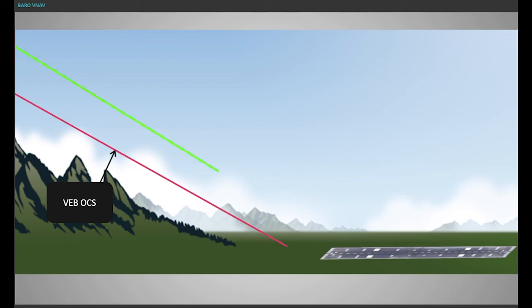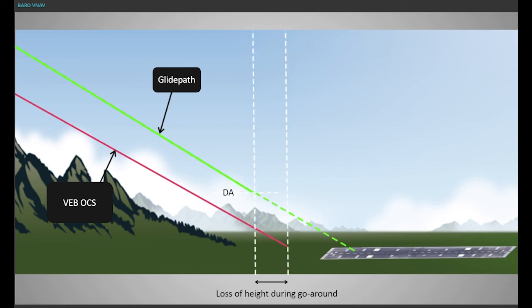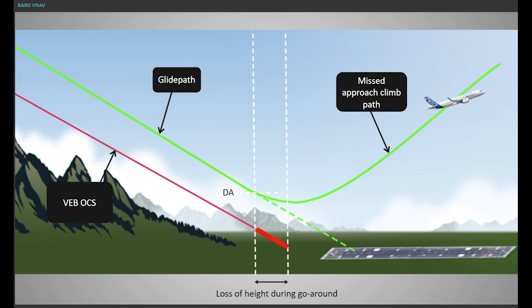The minima for RNP AR approach is a decision altitude. The loss of height in case of a go around is taken into account by procedure design.